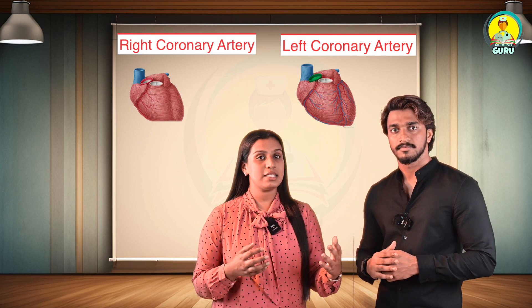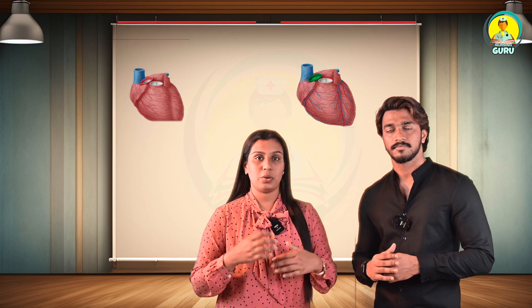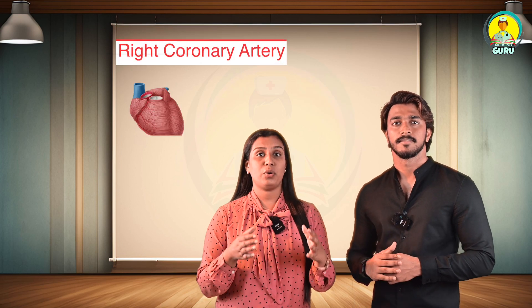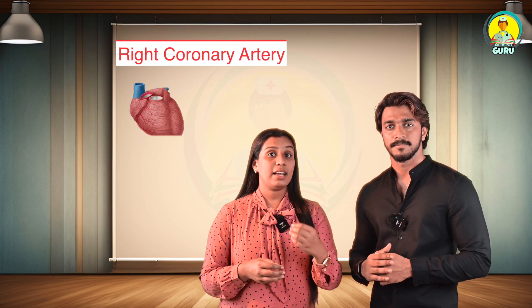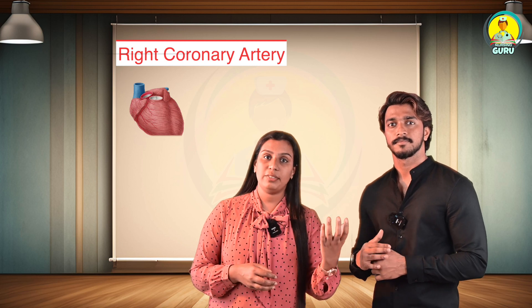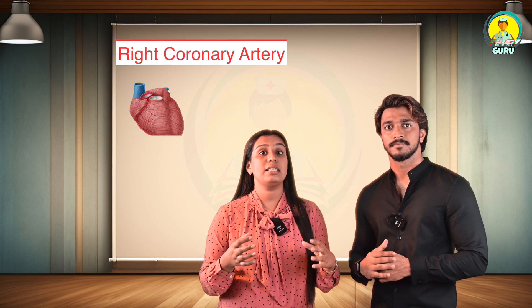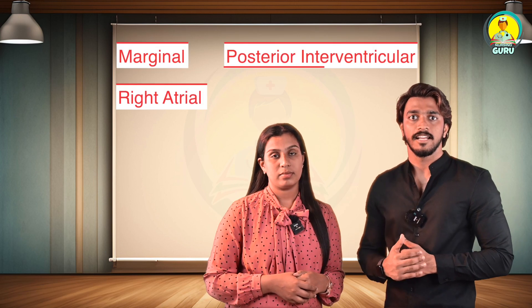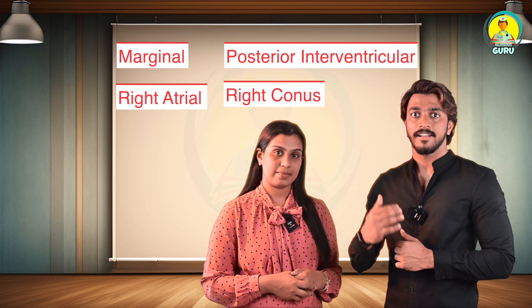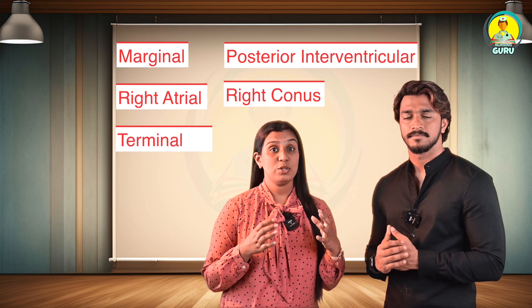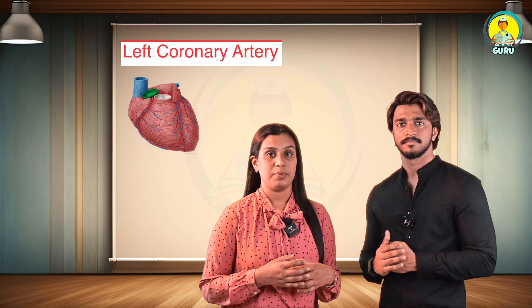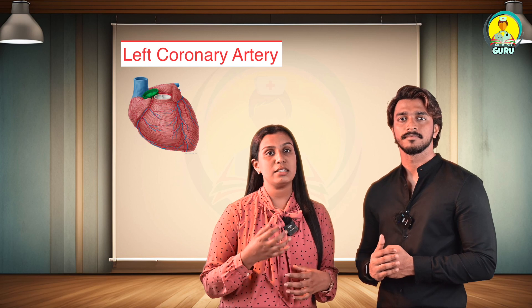The right coronary artery supplies the right atrium, right ventricle, and part of the left atrium and left ventricle. Its branches include the AV nodal, marginal, posterior interventricular, right atrial, and right conus terminal branches.